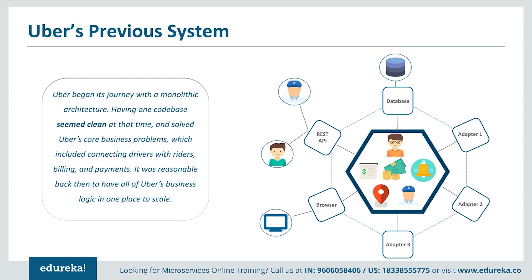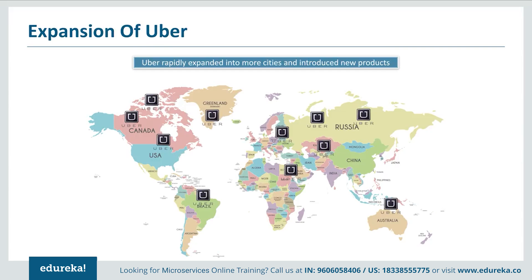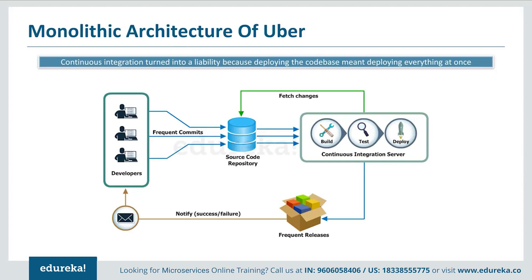All features — passenger management, billing, notification, trip management, and driver management — were composed in a single framework. Having one codebase seemed clean at that time and solved Uber's core business problems, which included connecting drivers with riders, billing, and payments. But as Uber started expanding worldwide into many more cities, it continuously faced problems of scalability and continuous integration. Developers could not continuously build, test, deploy, and release the software frequently as Uber expanded city-by-city throughout the world.